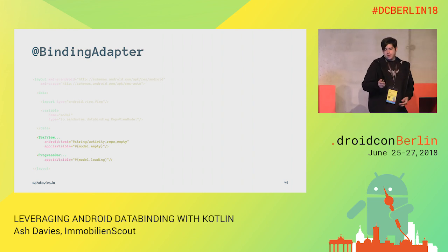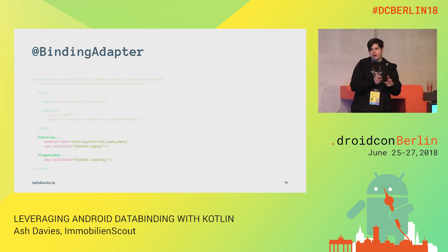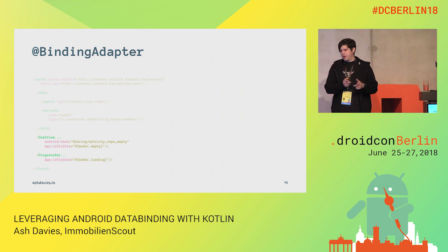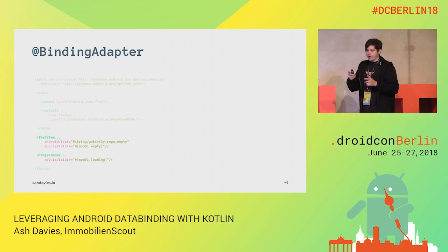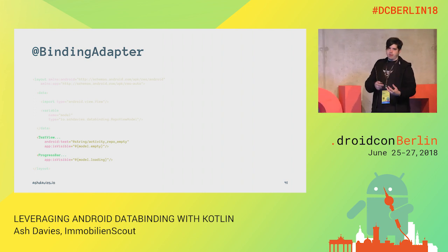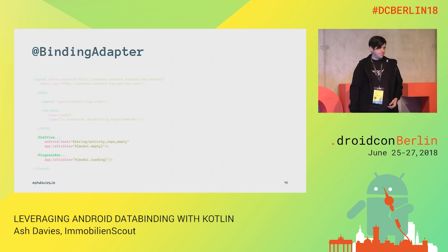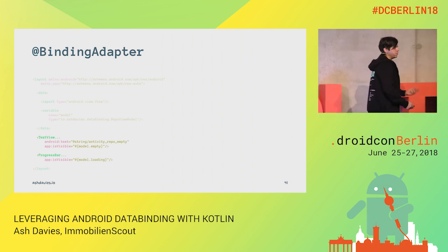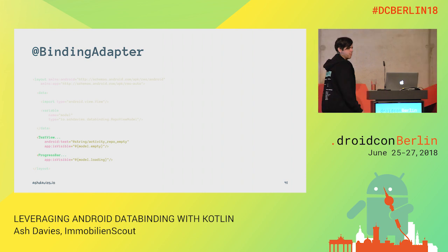Don't forget to actually use the app namespace instead of Android, because we're using our own custom property. So the XML looks good now, but we can improve the view model.